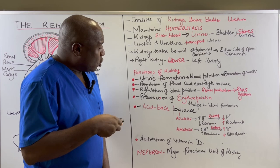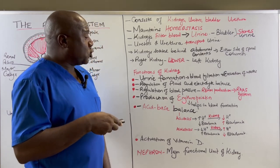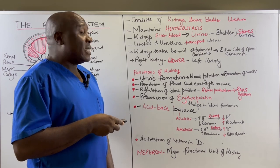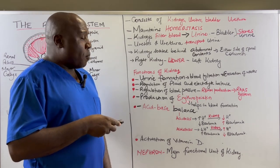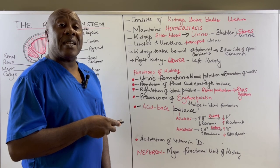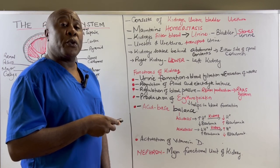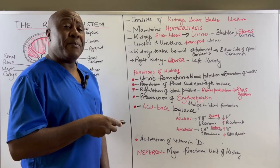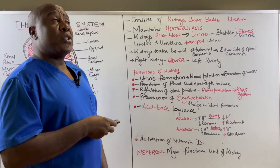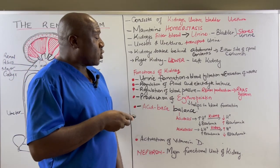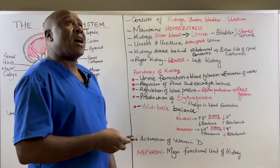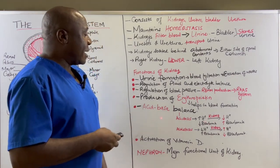Kidneys also produce what is called erythropoietin. Erythropoietin is a hormone that stimulates the stem cells in the bone marrow to produce more red blood cells. So kidneys help in blood formation through the production of erythropoietin, which stimulates the stem cells in the bone marrow to produce red blood cells.